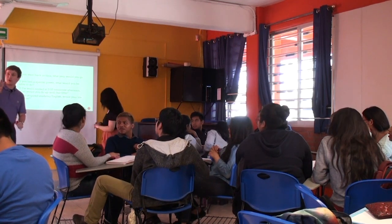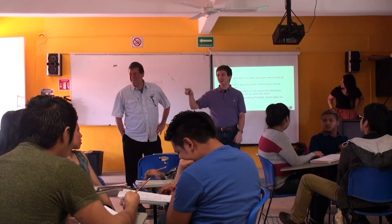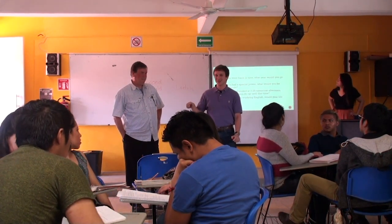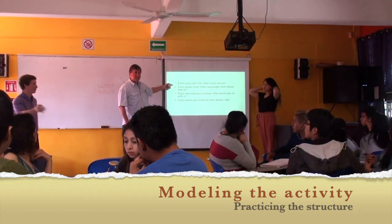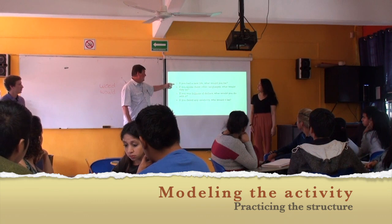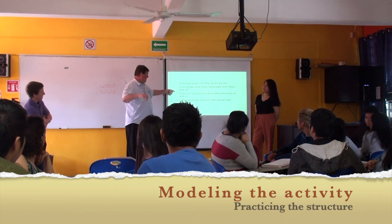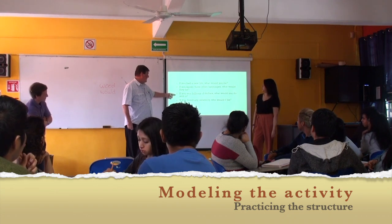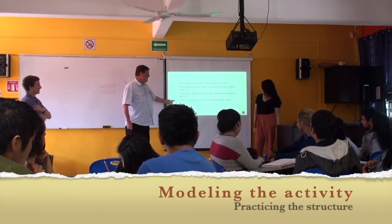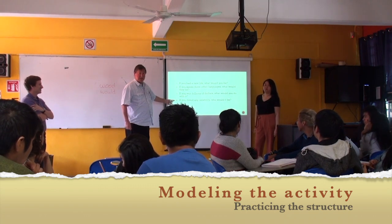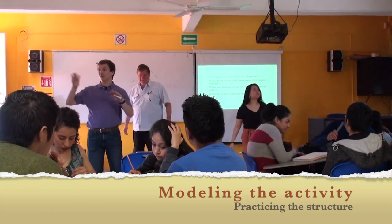Alright, we'll have four more practice questions. Whoever did not speak has to speak next time. So in the next round, if you did not speak this time, you have to speak next time. No silence, please. You can listen to Jack and Jamie for practice examples: 'If you had a new life, what would you be?' 'If you spoke three other languages, what would they be?' 'If you won billions of dollars, what would you do with it?' 'If you dated any celebrity, who would it be — Donald Duck or Mickey Mouse?' Everybody understand the questions?